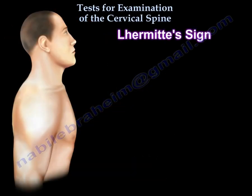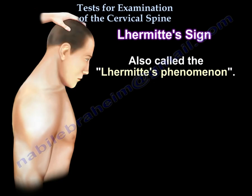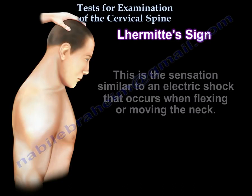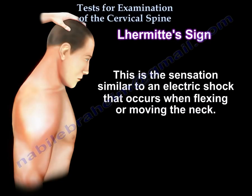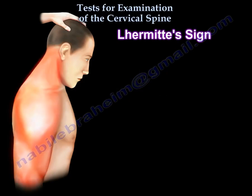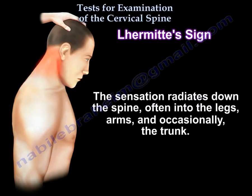Lhermitte Sign, also called Lhermitte's Phenomenon, is the sensation similar to an electric shock that occurs when flexing or moving the neck. The sensation radiates down the spine, often into the legs, arms, and occasionally the trunk.